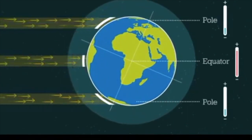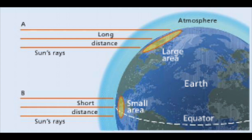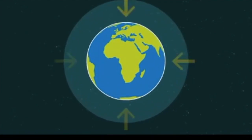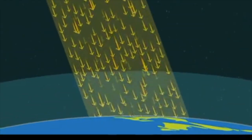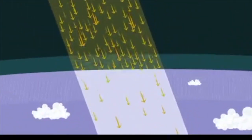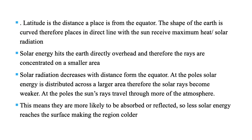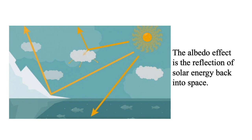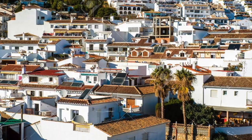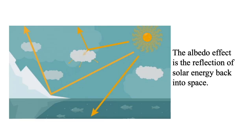Solar energy has to travel a short distance to the equator but is spread out over a wider area at the poles. The earth's atmosphere both absorbs and reflects solar energy. There is something called the albedo effect — the reflection of solar energy back into space. For example, many houses in Spain are painted white because light colors reflect solar energy, keeping the inside cooler.